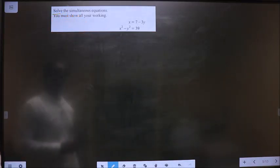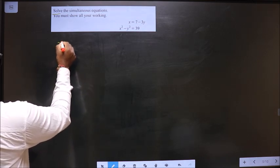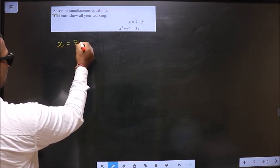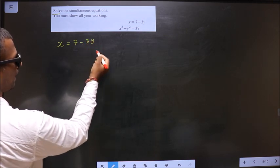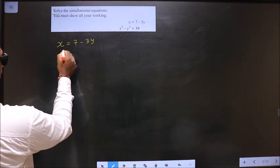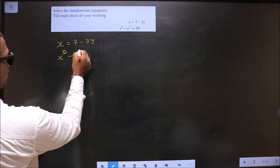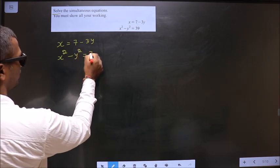Solve the simultaneous equations. First, the given equations are x equal to 7 minus 3y and x square minus y square equal to 39.